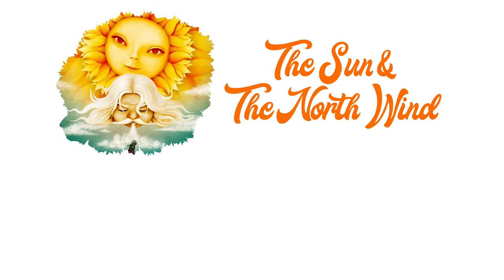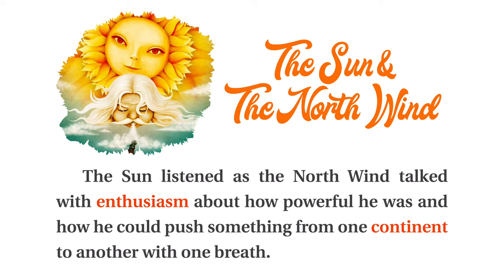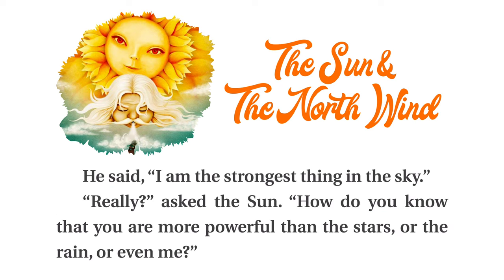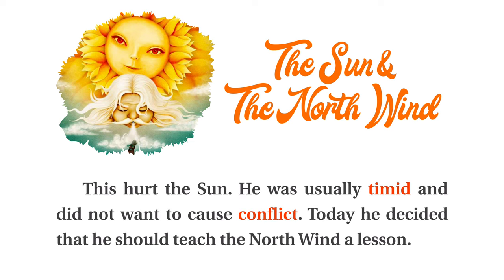The Sun and the North Wind. The sun and the north wind were talking to each other in the sky. The north wind was saying that he was better than everyone else. The sun listened as the north wind talked with enthusiasm about how powerful he was and how he could push something from one continent to another with one breath. He said, I am the strongest thing in the sky. Really? asked the sun. How do you know that you are more powerful than the stars or the rain or even me? The north wind laughed with disrespect. He yelled, You! That's a joke! This hurt the sun. He was usually timid and did not want to cause conflict. Today, he decided that he should teach the north wind a lesson.